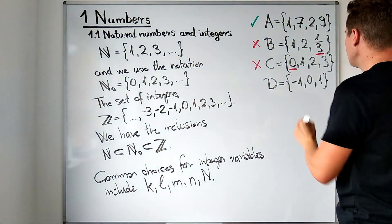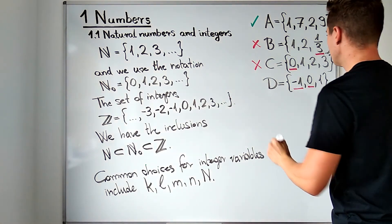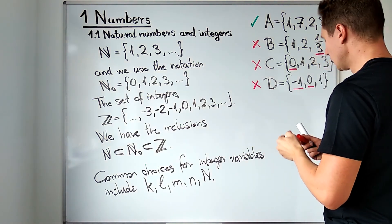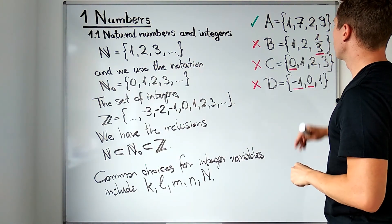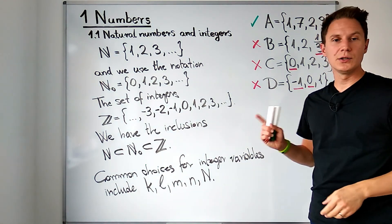And finally set D has the element 0 and negative 1 in it, both of which would exclude it from the set of correct answers. So I hope you enjoyed this video and I'll see you in the next one.